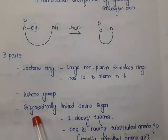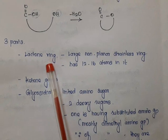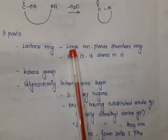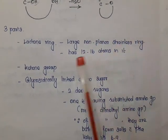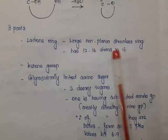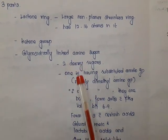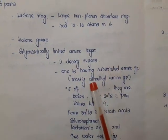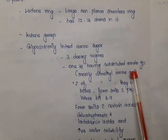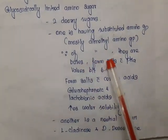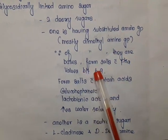The macrolide structure has three parts: one is the lactone ring, the second is a ketone group, and the third is glycosidically linked sugars. The lactone ring is a large non-planar, strainless ring containing 12 to 16 atoms. The two sugars attached may be deoxy sugars, and one is having a substituted amino group — usually a dimethylamino group. Because of this dimethylamino group, macrolides act as bases and form salts.